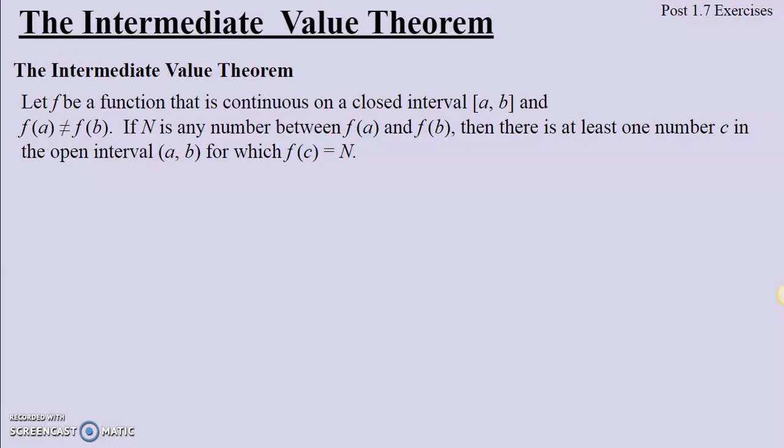So here is the actual theorem, and then we'll break it down into its smaller parts. If f is a function that is continuous on a closed interval from a to b, where the output at a does not equal the output of b, we can say that there is a number N between these two outputs such that there is at least one number c in the open interval a to b for which the output of c is equal to N.